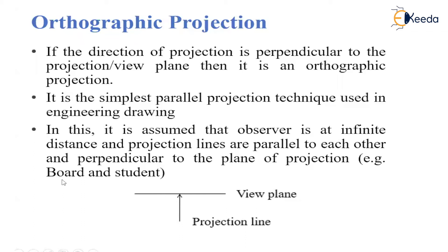For example, consider a board and student scenario: whenever there is a classroom, the students are sitting right in front of the board. That is nothing but an example of orthographic projection.